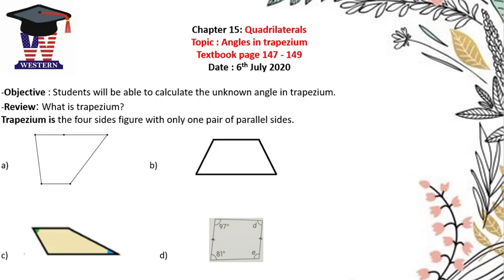Good morning class. Welcome to our math class. Today we're still in chapter 15, quadrilateral. The topic is angle in trapezium. You can look in your textbook page 147 to 149. The objective of the lesson today: students will be able to calculate the unknown angle in a trapezium. Before we learn about angle in trapezium, I will review what you have learned before.